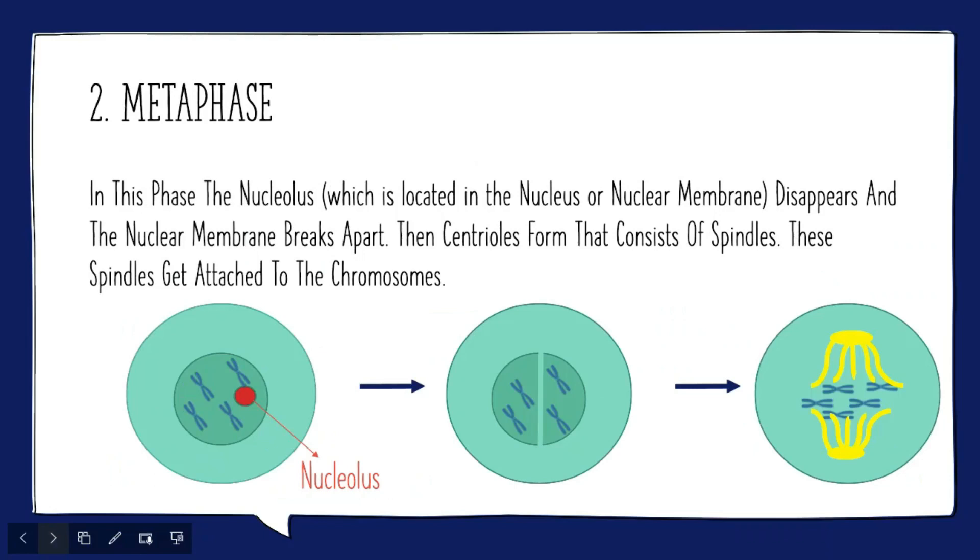Metaphase. In this phase the nucleus which is located in the nuclear membrane disappears and the nuclear membrane breaks apart. Then centrioles form that consist of spindles. These spindles get attached to chromosomes.